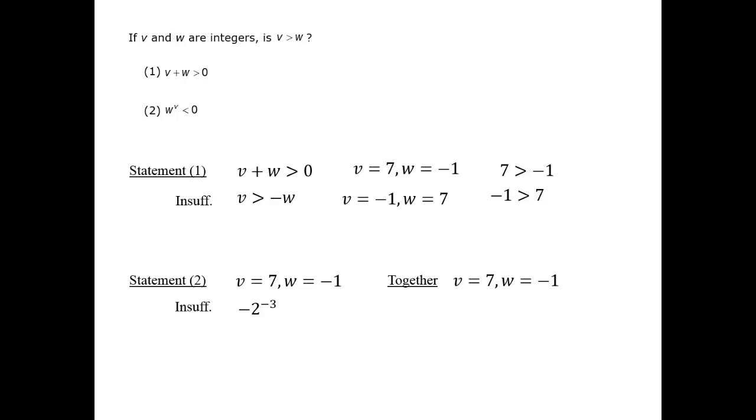To see why, we can look at statement 1. From statement 2, w has to be negative. But by statement 1, if w is negative, then v has to be positive. That's the only way to get the sum above 0, as statement 1 requires.